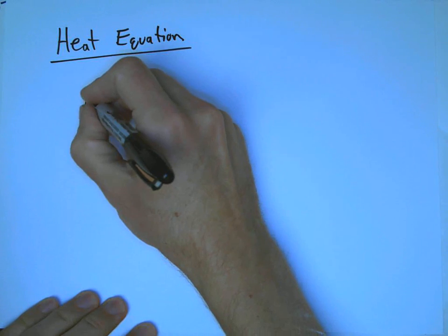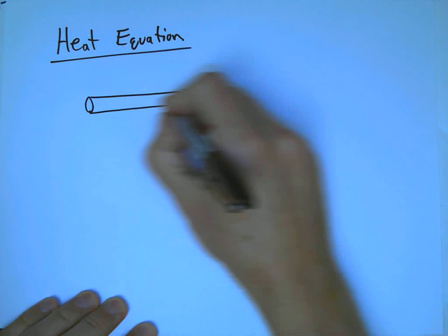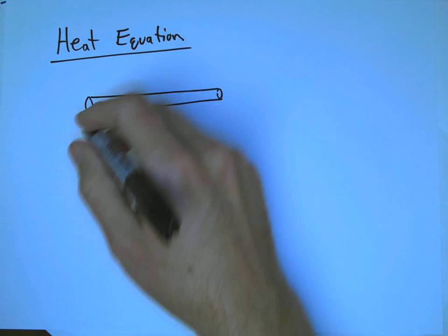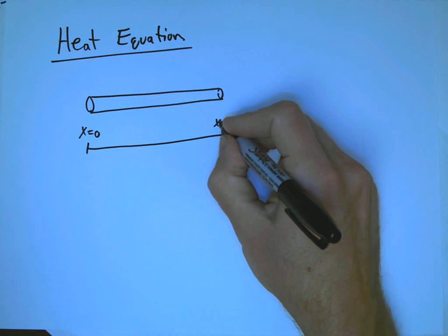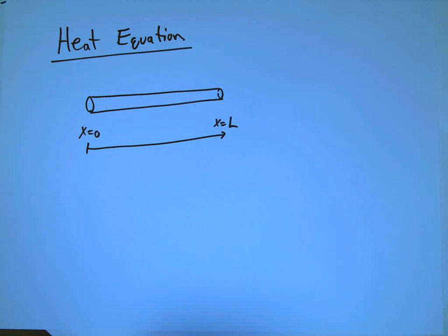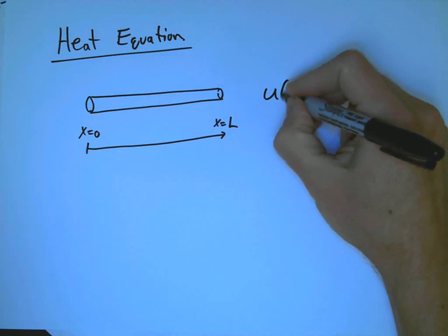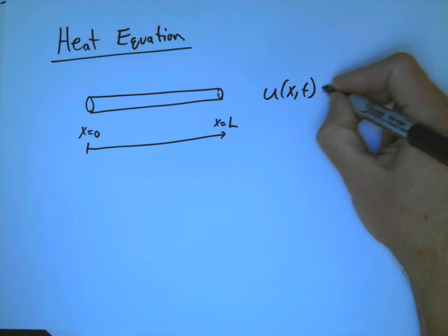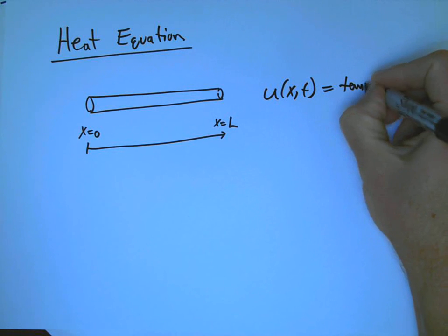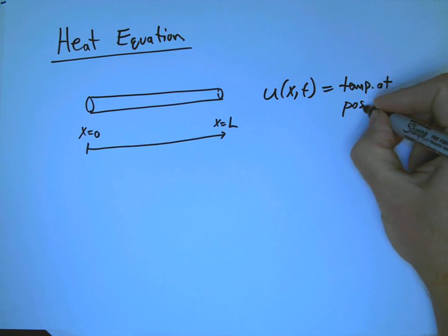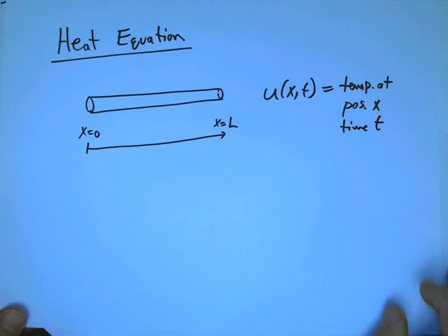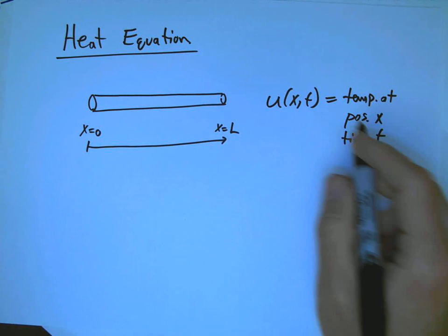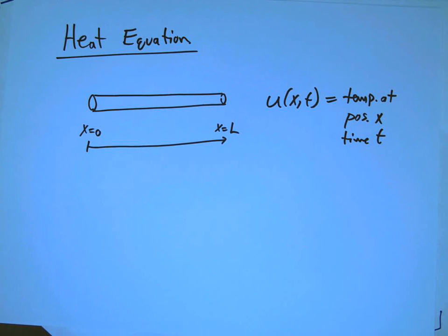The first case is one space dimension and one time dimension. I'm figuring I've got a rod, let's say goes from x equals 0 to x equals L, rod of length L, and at every time and every point, I have U of x t, and let's say that's the temperature at position x and time t.